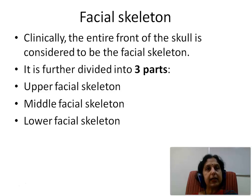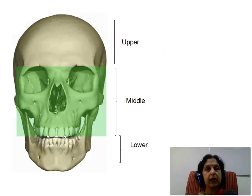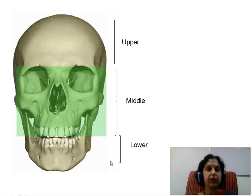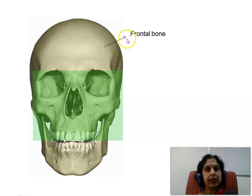Clinically, the entire front of the skull is considered to be the facial skeleton. It is further divided into three parts: upper facial skeleton, middle facial skeleton, and the lower facial skeleton. This picture shows us the three parts of the facial skeleton — upper, middle, and lower. The upper facial skeleton forms the skeleton of the forehead and it is comprised of the frontal bone, as seen here.